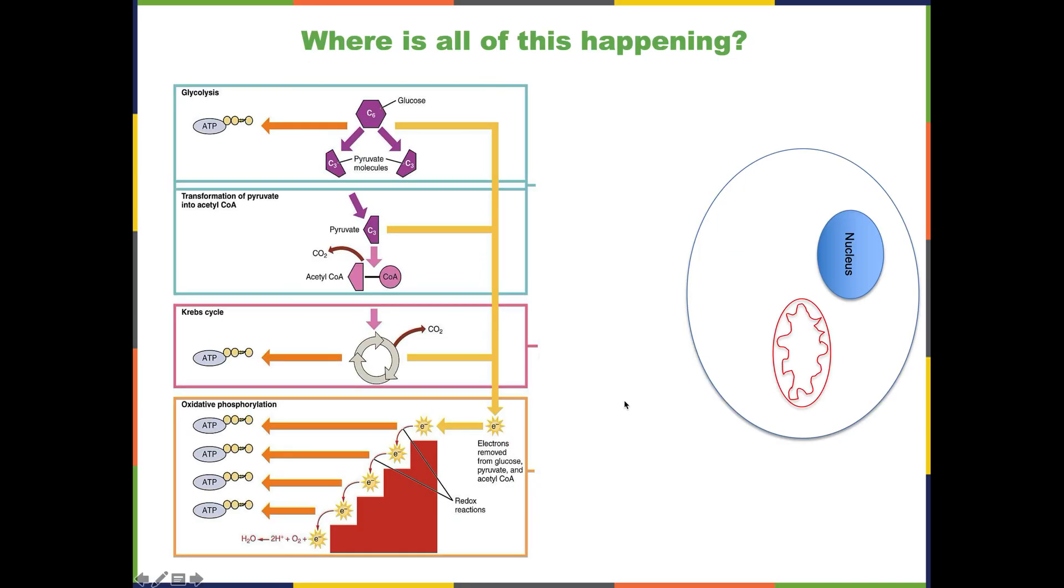Where is all of this happening? The glycolysis step happens in the cytoplasm. The transformation of pyruvate into acetyl-CoA happens in the mitochondrial matrix. The Krebs cycle or citric acid cycle also happens in the mitochondrial matrix.